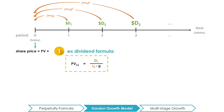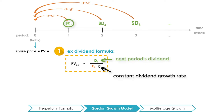With the ex-dividend formula, the price of the stock with growing dividends is equal to D1 divided by RE minus G, where D1 is the amount of next period's dividends, G is the constant growth rate of the dividends, and RE is the appropriate discount rate that reflects the riskiness of the firm's equity relative to the rest of the stock market.